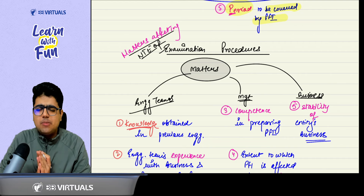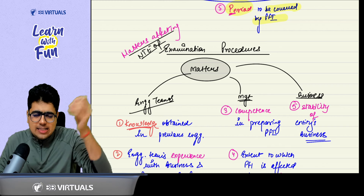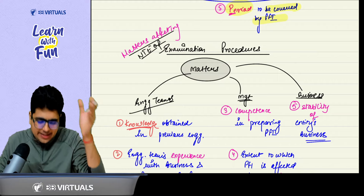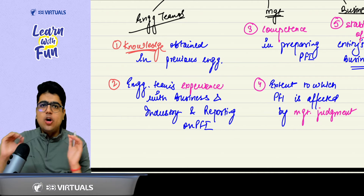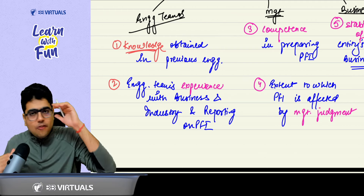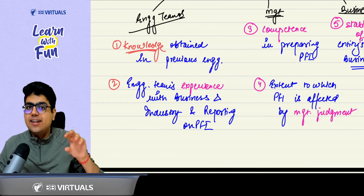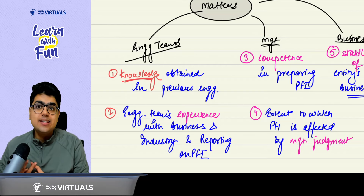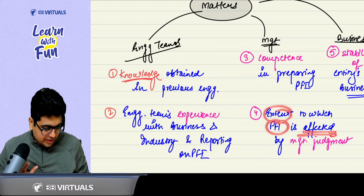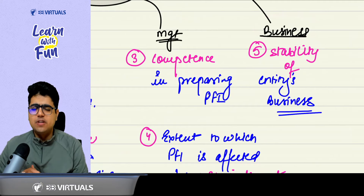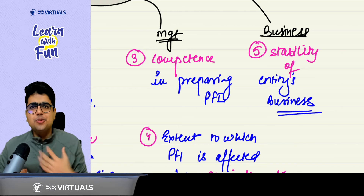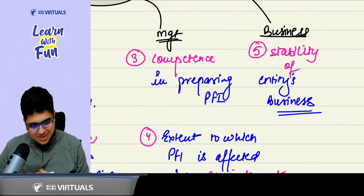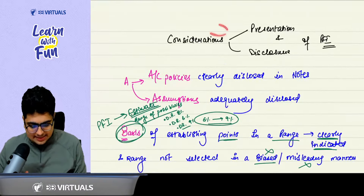Next topic: matters affecting the nature, timing, and extent of procedures. We divided these into three areas — engagement team, management, and business. For the engagement team: knowledge gained in previous engagements and experience of working on similar engagements in the same business and industry. For management: competency of management in preparing the PFI, and the extent to which the PFI is affected by management's judgment. For business: stability of the business — the more stable the business, the less effort you need to put in to check the information.